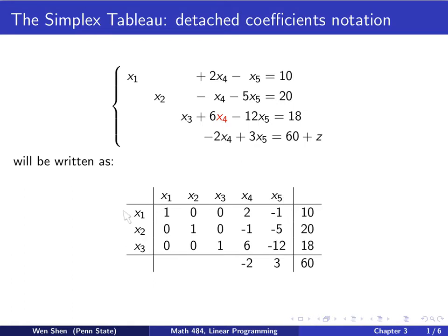Then down here, we record the corresponding basic variable, which is x1, x2, x3 for the three equations. And then we record the corresponding coefficient in this position here — so here is kind of a diagonal. The last two columns record the coefficients here. Then we draw a vertical line to say that after that is the right-hand side of the equation, and we record the numbers.